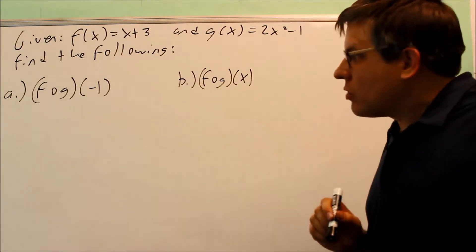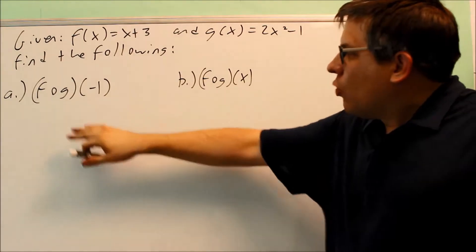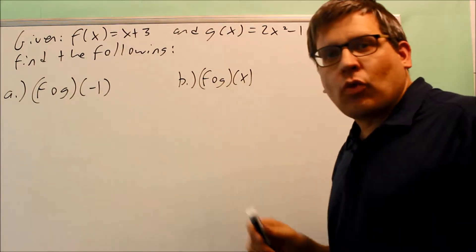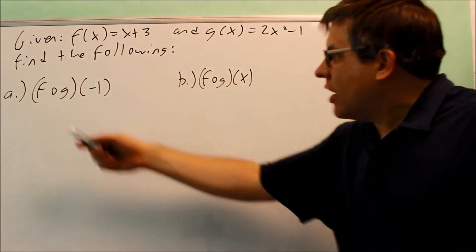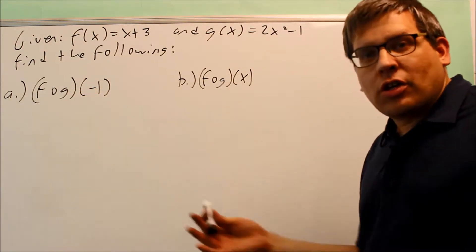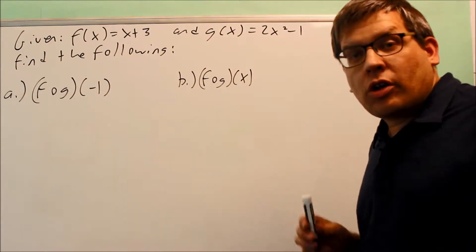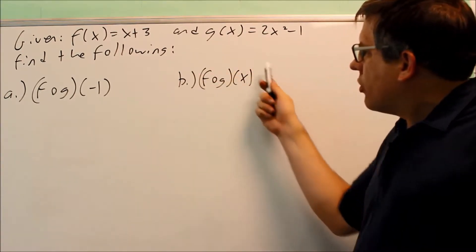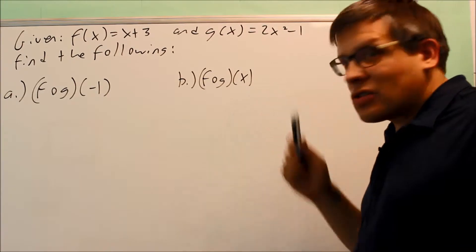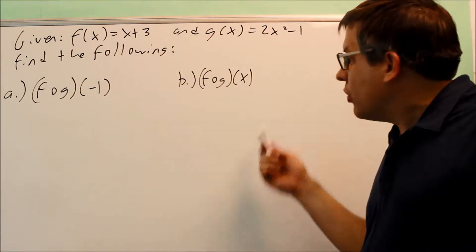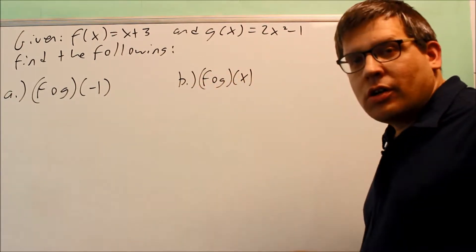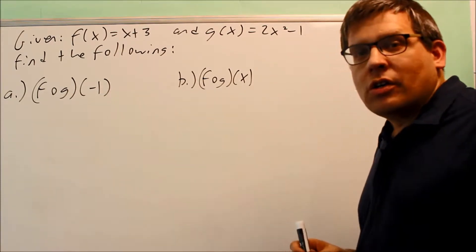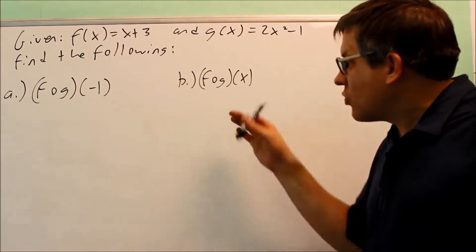In the previous example, I showed that you could work this all out with numbers first — you could do g of negative 1, get an answer, then put that answer into f and get your final answer. Another way I want to show you is doing the general expression part first. Since it's asking us to find f of g of x anyway, we could first start by doing that one. Then whatever answer we get there, we'll just plug negative 1 into it and get our final answer for part a.